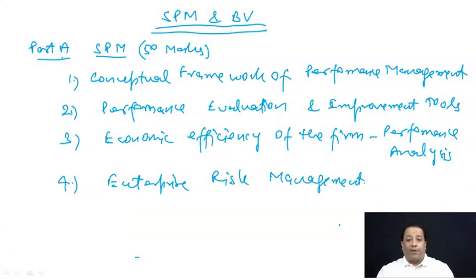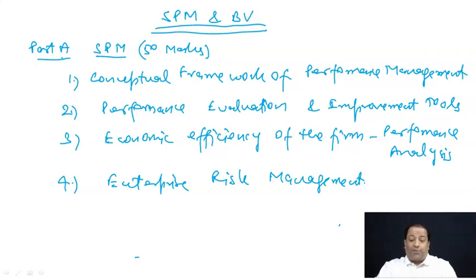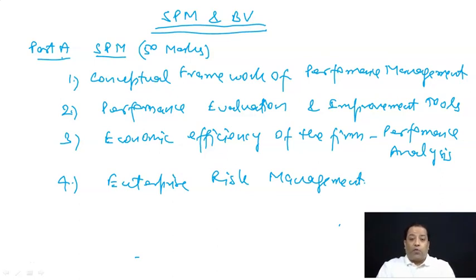There are two parts: SPM and Business Valuation. The first part is SPM — Strategic Performance Management. The other part is Business Valuation. Part A, Strategic Performance Management, contains 50 marks, and Business Valuation also contains 50 marks.